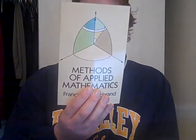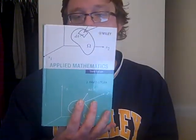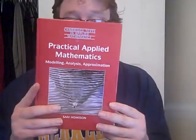So here's what I've been trying to get through. The first is a Dover book: Methods of Applied Mathematics by Hildebrand. Another one is Applied Mathematics by J. David Logan, which I really like so far. And the third is Practical Applied Mathematics by Howison. I'll put links in the description.